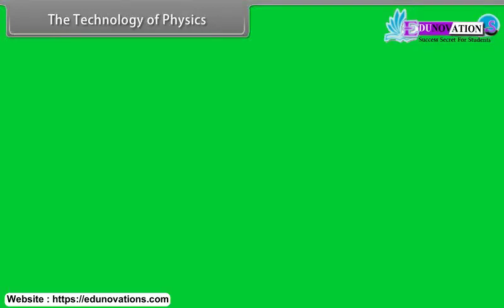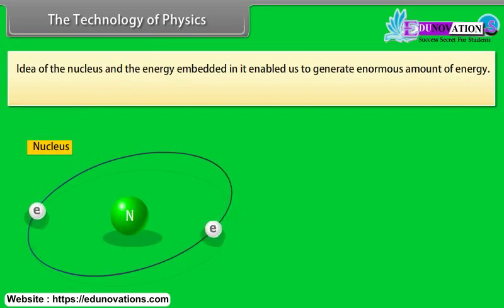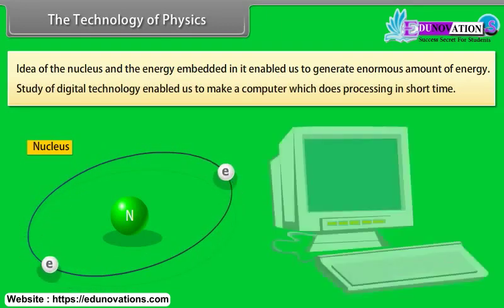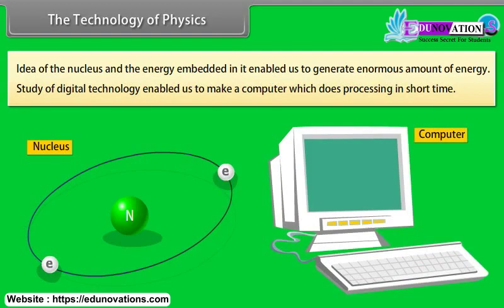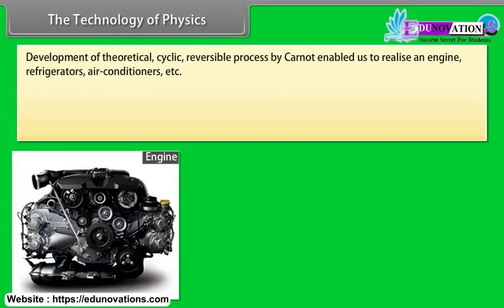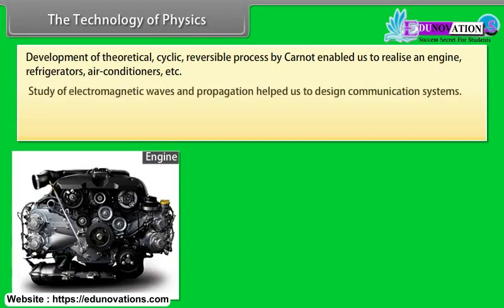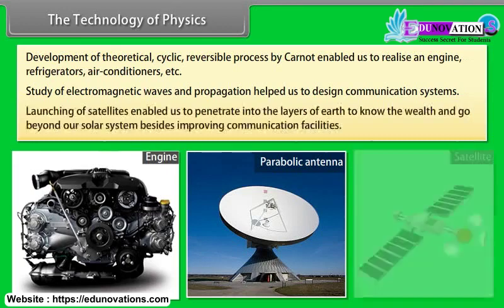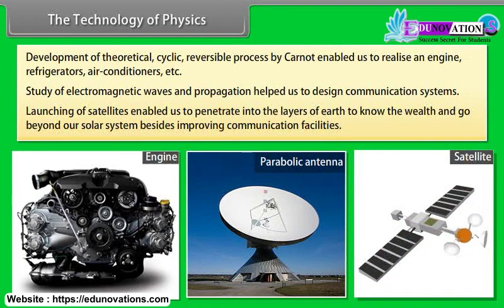The technology of physics: the idea of the nucleus and the energy embedded in it enabled us to generate enormous amounts of energy. Study of digital technology enabled us to make computers which do processing in a short time. Development of the theoretical cyclic reversible process by Carnot enabled us to realize engines, refrigerators, air conditioners, etc. Study of electromagnetic waves and propagation helped us to design communication systems. Launching of satellites enabled us to penetrate into the layers of Earth, to know the wealth of our planet and go beyond our solar system, besides improving communication facilities.